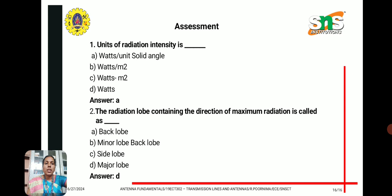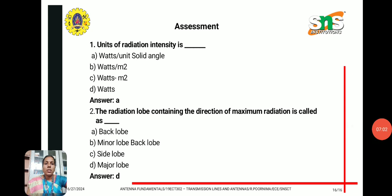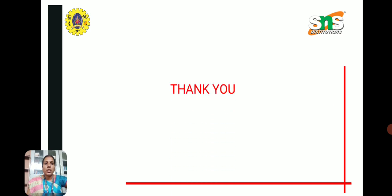Let us take an assessment. First question: what are the units of radiation intensity? The answer is watts per unit solid angle. Second question: the radiation lobe containing the direction of maximum radiation is called? The answer is the major lobe. Thank you for listening.